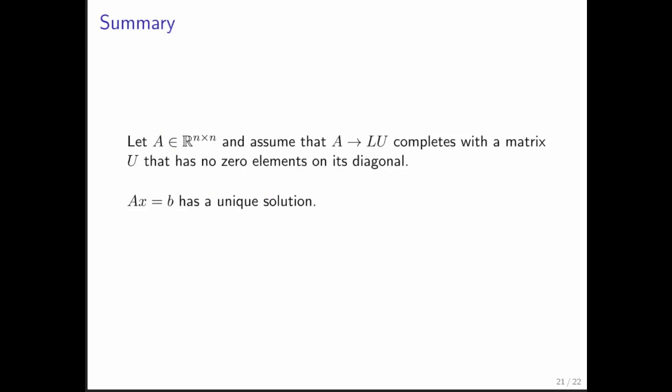In summary: if you're given a square matrix A and LU factorization completes with a matrix U that has no zero elements on its diagonal, then we have a methodology for determining a solution to Ax = b regardless of what right-hand side b you're given. And what we have just argued is that that solution is actually unique. So the answer here is: always.